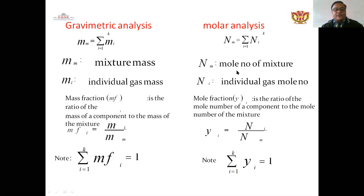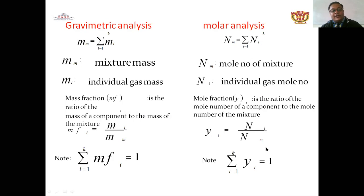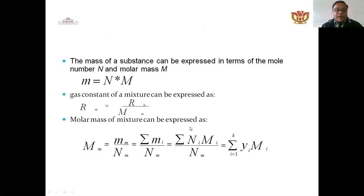The molar analysis uses the number of moles. The mole number of the mixture is Nm, representing the total gas molecules. There are two systems: mass fraction and mole fraction. The mass of a substance can be expressed in terms of mole number N and molar mass M, as m = N × M.